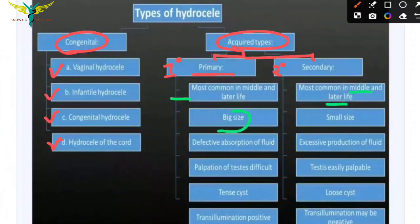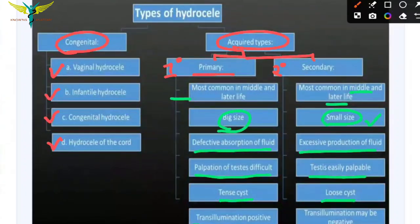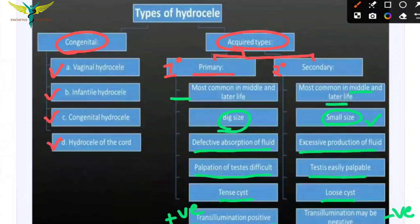Primary hydrocele is bigger in size; secondary is smaller. Primary hydrocele is caused by defective absorption of fluid, while secondary is due to excessive production of fluid. In primary hydrocele, palpation of the testis is difficult, whereas in secondary the testis can be easily palpated. The primary hydrocele cyst is tense while secondary is loose. The transillumination test is positive in primary acquired hydrocele but may be negative in secondary acquired hydrocele.